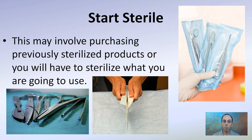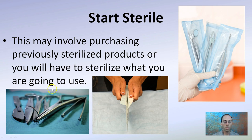In the lab, this may involve purchasing previously sterilized products that come in sealed containers — you might be familiar with those at the dentist office, for example — or you'll have to sterilize what you're going to use. UV light is one example. There can also be sterilizing fluids that can be used. So you want to start sterile with whatever tools you're using, whether you purchase them sterile or sterilize them yourself.